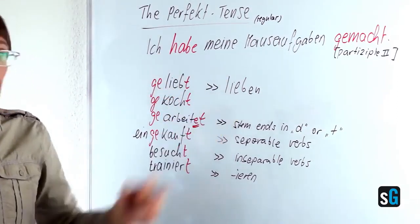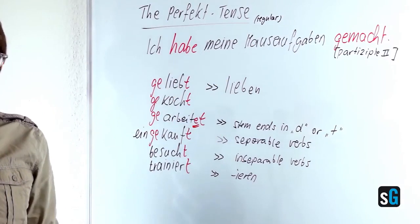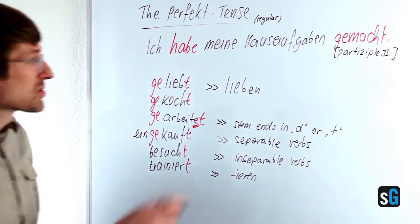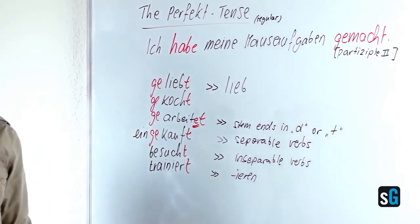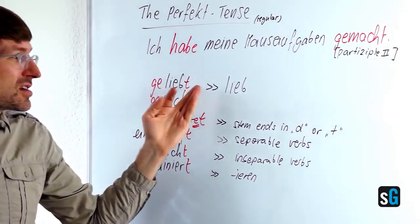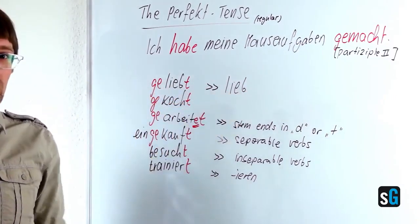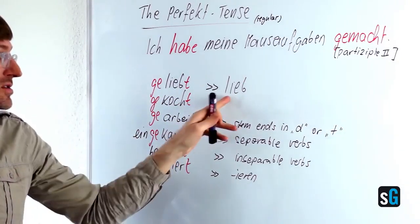Geliebt, for example, comes from the verb lieben, which means to love. And all I've got to do is to just eliminate the en from the infinitive and put the ge and the t around the stem.